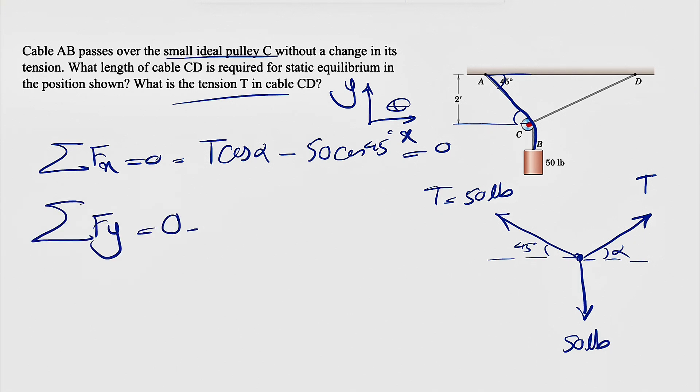Let's move on to our Y equations. We're going to have T sine of alpha plus 50 cosine of 45 degrees, and we also have minus 50 pounds. I'm just going to show this here. And this is also equal to zero.